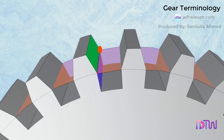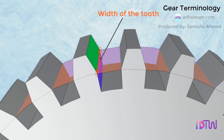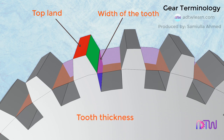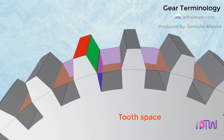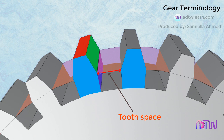The distance from one edge of the tooth to the other is called the width of the tooth. The topmost surface of the tooth is called the top land of the tooth. Tooth thickness is the width of the tooth measured along the pitch circle. Tooth space is the width of space between two adjacent teeth, measured along the pitch circle.